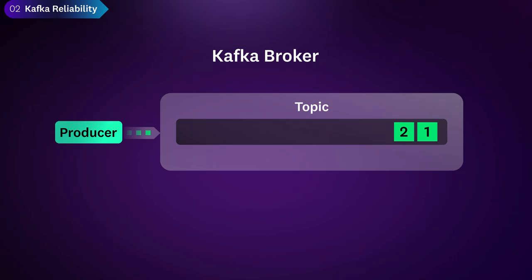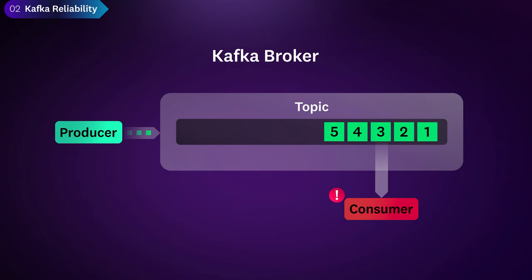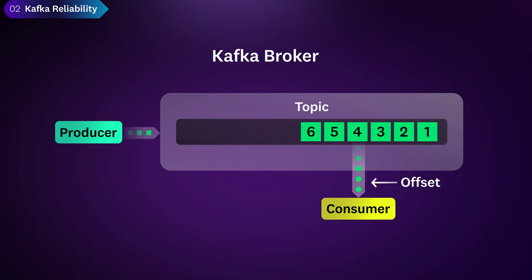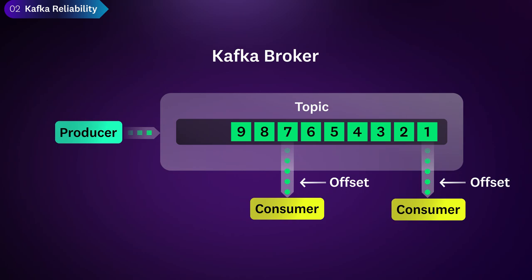Kafka is a persistent log-based message queue. Brokers store incoming messages in the order received. Kafka uses an offset to bookmark a consumer's progress in processing data, so if the service fails, it can easily come back to where it left off without duplicating any effort. As a consumer reads messages and the offset moves, older read messages are persisted to disk for later analysis by other consumers. Each consumer has its own offset, so multiple consumers can independently read from the same data stream.